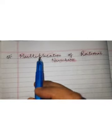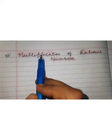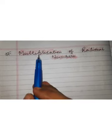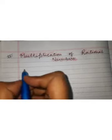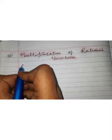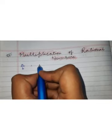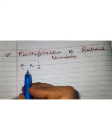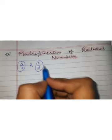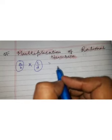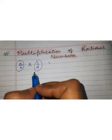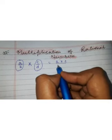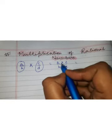Now we are going to start with a new topic in the same chapter — that is multiplication of rational numbers — how we are going to multiply two rational numbers. Let us suppose the first rational number is of the form a/b and the second one is of the form c/d, and we have to multiply these. What we have to do is multiply the numerator with numerator and denominator with denominator, so this is going to be a×c upon b×d.